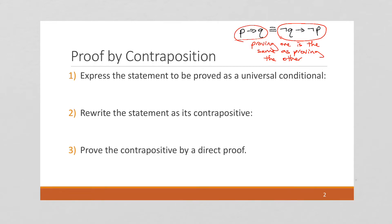So the first step is going to be to express the statement to be proved as a universal conditional statement. This is only going to work if you can express the statement as a universal conditional statement, because it's only conditional statements that have contrapositives. We're saying for all x in some domain, if P(x) is true, then Q(x) is true.